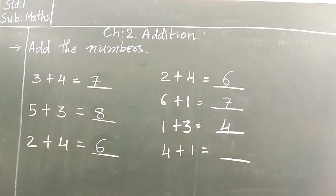Now see the next one. 4 plus 1. So we have to take 4 in left hand, 1 in right hand. So shall we count it all together? 1, 2, 3, 4 and 5. So the answer is 5.